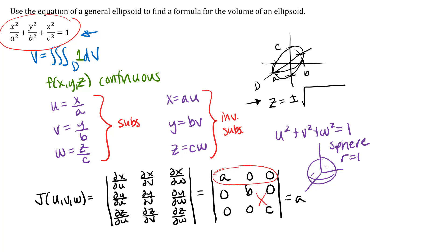So bc minus zero. And then when I do these other two entries, I'll have zero times the determinant of what's left and then zero. So my determinant is just abc. Notice also that all of my partial derivatives are just constants, so those are continuous everywhere. So we can go ahead then and just transform our integral.